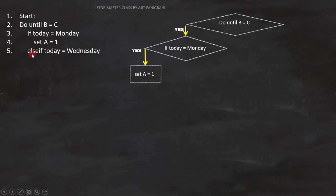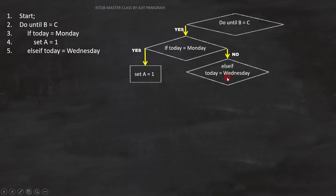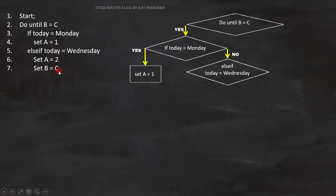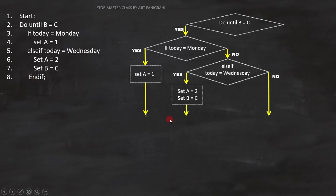Line number 5 is 'else if.' It will execute when the condition becomes false. If this condition fails, we have to evaluate this condition. And if this condition becomes true, line numbers 6 and 7 will execute: set A equals to 2, and B equals to C. Since both are statements, we can represent them like this on the flowchart. Line 8 is 'end if,' where the condition on line number 3 ends, and we can represent it like this on the flowchart.